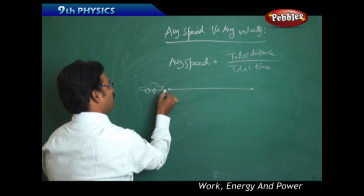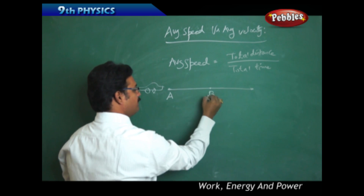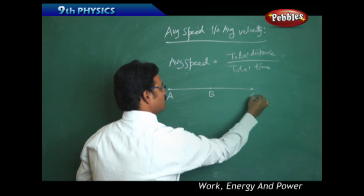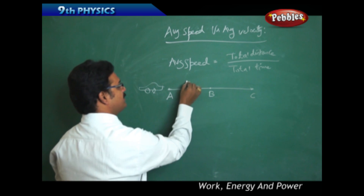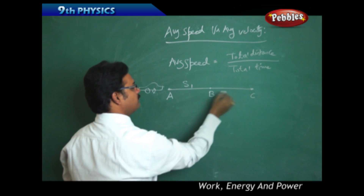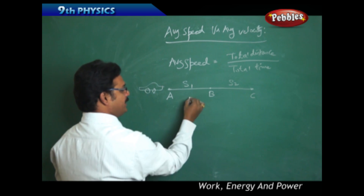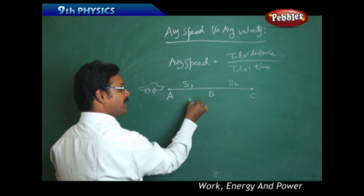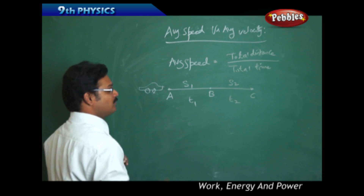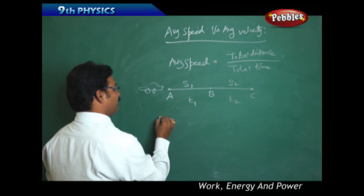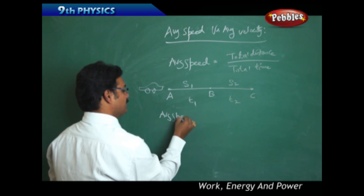Consider a path: going from point A to point B, then reaching point C. The distance from A to B is s1, and from B to C is s2. The time taken from A to B is t1, and from B to C is t2. Then average speed equals s1 plus s2 divided by t1 plus t2.